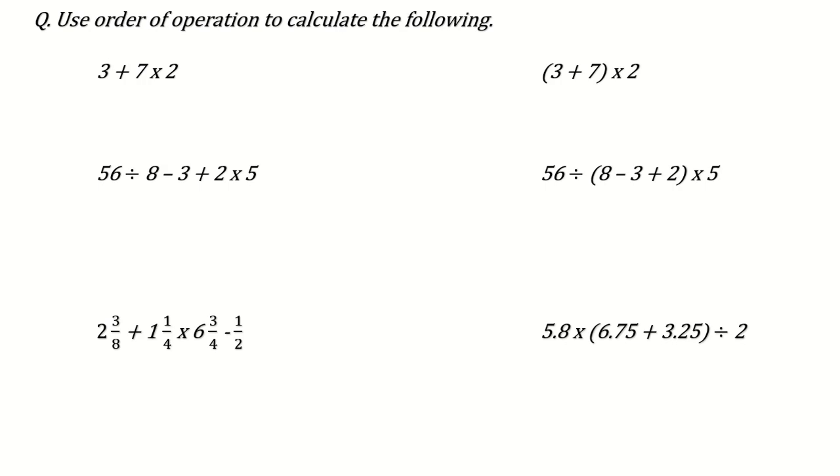Next question can be: use order of operations to calculate the following. See, just we have to follow the PEMDAS or BODMAS rule. Now, this is 3 plus 7 multiply by 2 and you know in PEMDAS we multiply first. So 7 times 2 is 14. 14 plus 3 is 17. Similarly here, 3 plus 7. Now it is written in the bracket. So bracket P, P means parenthesis. Hope you remember that, PEMDAS rule. P means parenthesis. This is parenthesis. So 7 plus 3 is 10. 10 multiply 2 is 20. Now here you see PEMDAS again. So D comes first. So 56 divided by 8 is 7 minus 3 plus 2 multiply 5 is 10. Now 7 minus 3 is 4 plus 10 means it is 14.